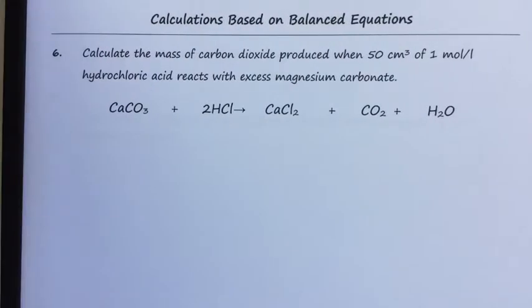Question 6: Calculate the mass of carbon dioxide produced when 50 cubic centimeters of 1 mole per liter hydrochloric acid reacts with excess magnesium carbonate.